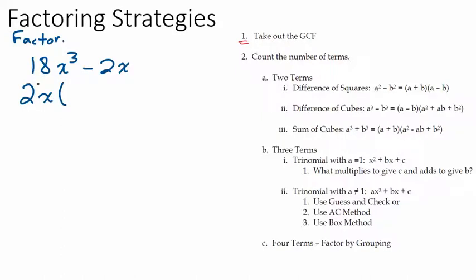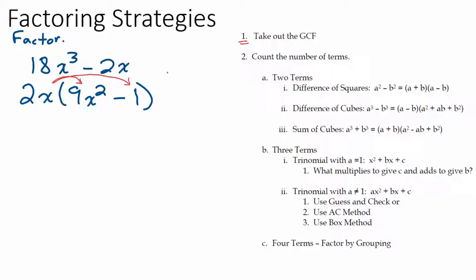We take that factor out, which basically means dividing. We take 8x cubed and divide it by 2x, which gives 4x squared. Bring down the minus. Now take 2x and divide it by 2x. A lot of students struggle here because they think if they take the 2x out there's nothing left. But since you're dividing 2x by 2x, the answer is 1. You can always check by multiplying 2x back in by distributing and you should end up with what you started with.